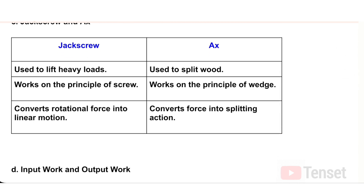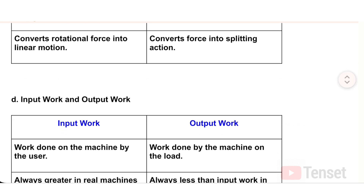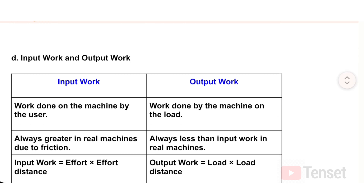C) Jack Screw vs. Axe: A jack screw is used to lift heavy loads, while an axe is used to split wood. A jack screw works on the principle of the screw and converts rotational force into linear motion. An axe works on the principle of the wedge and converts force into a splitting action.